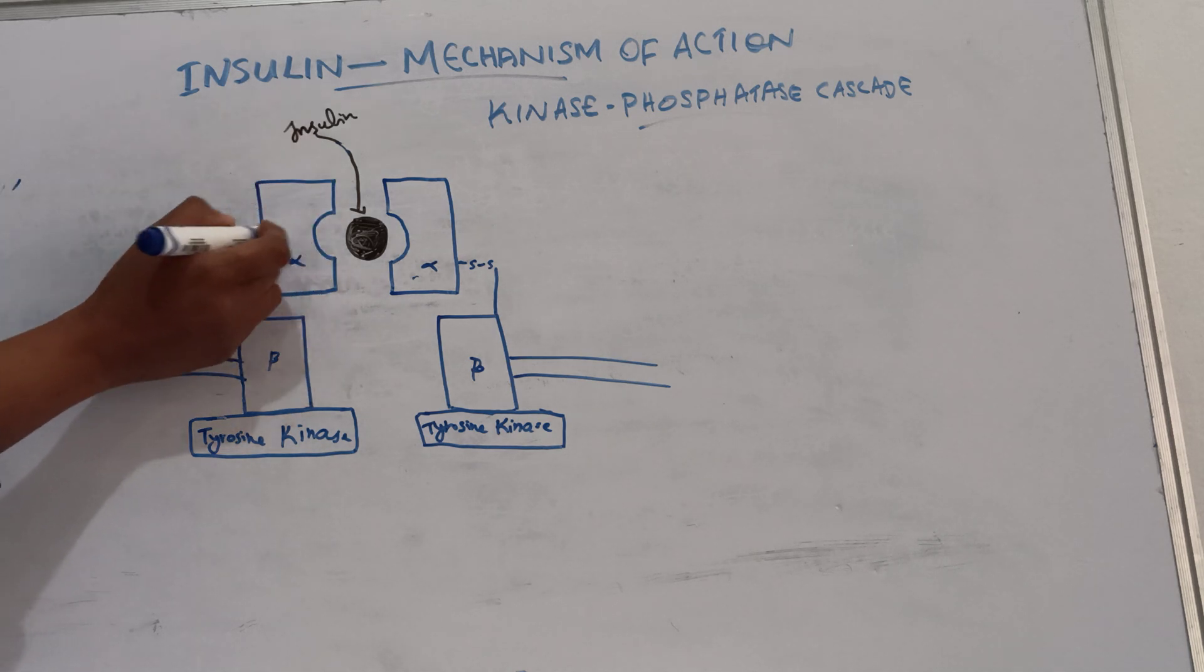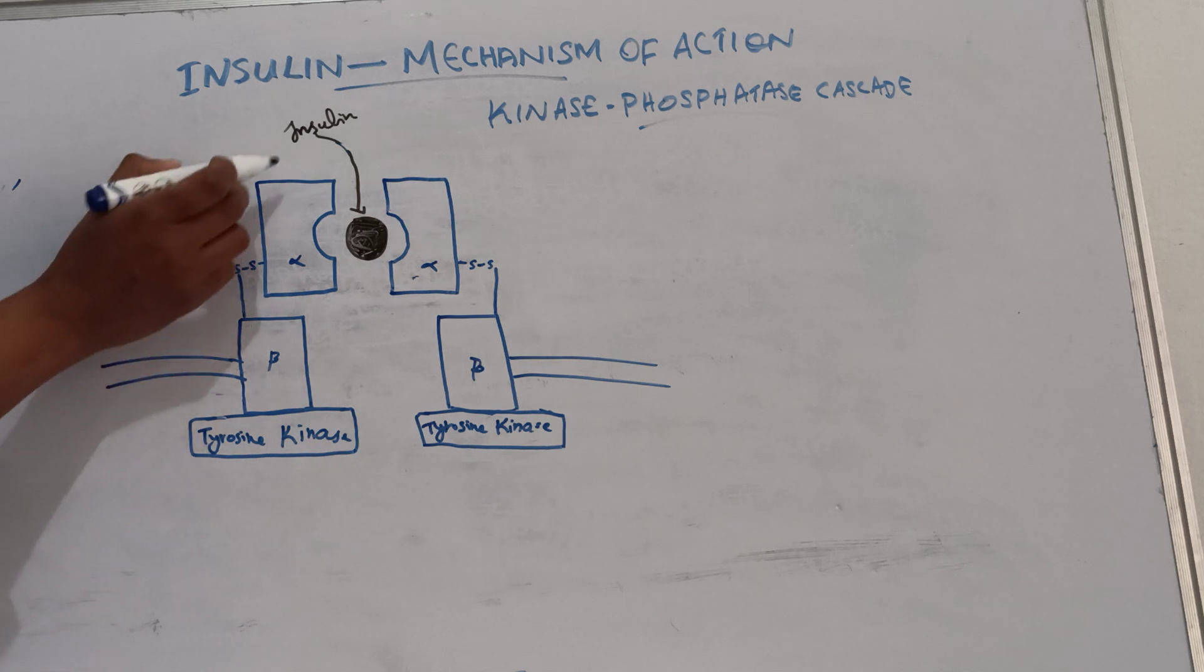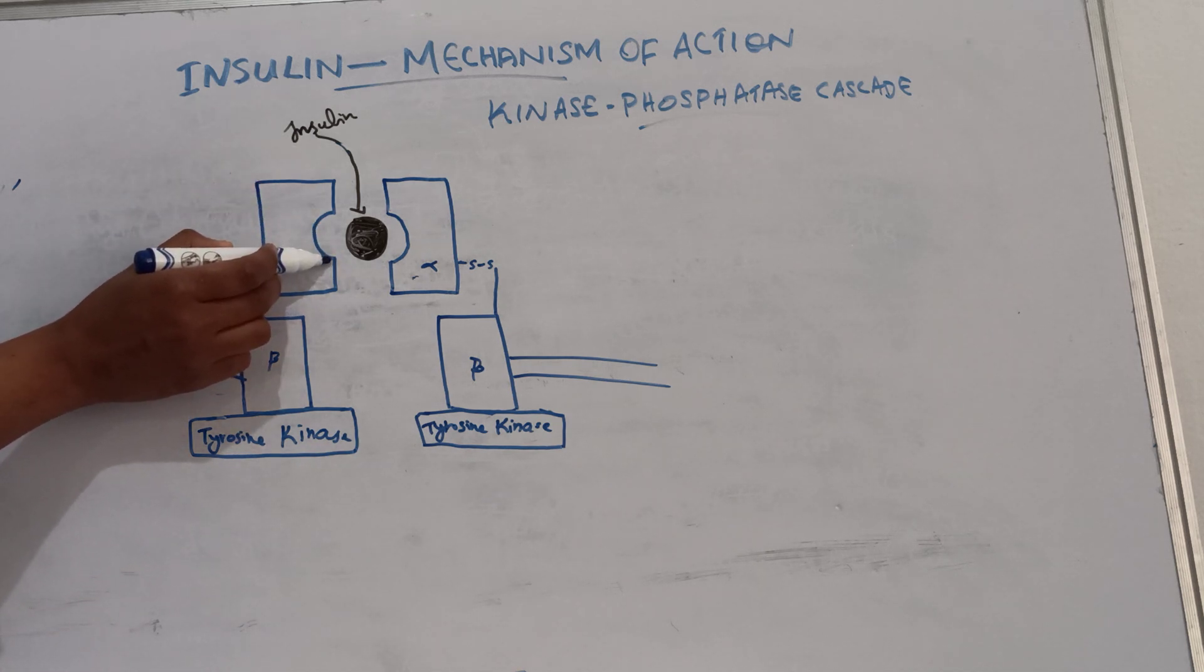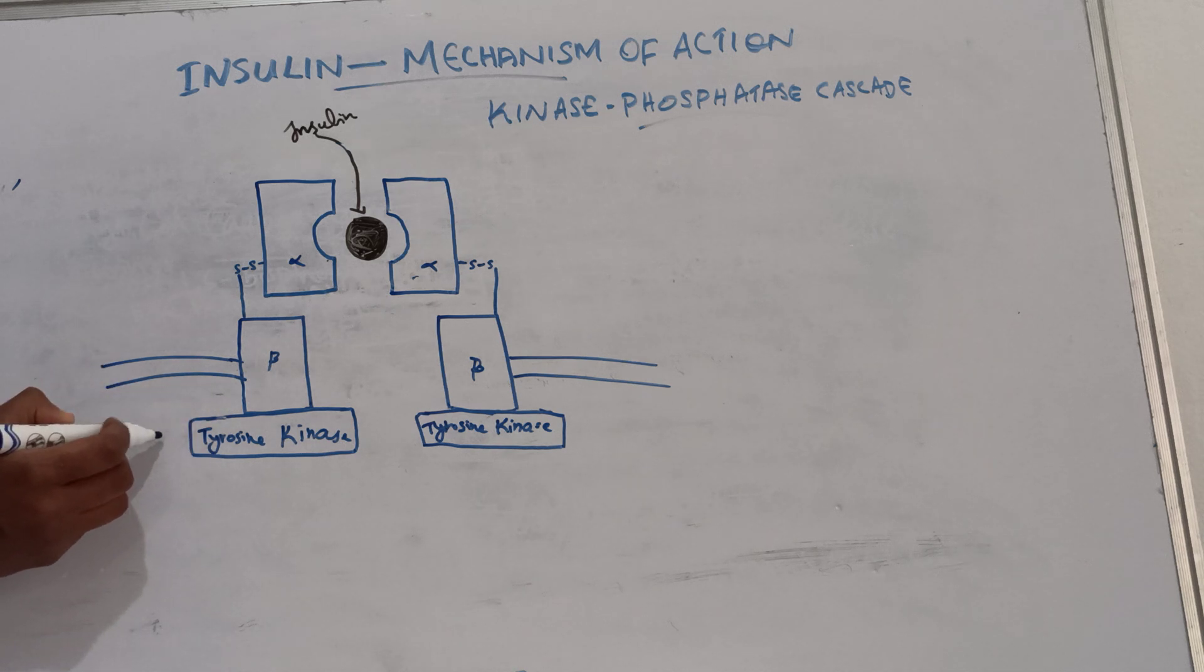Binding of insulin to the receptor stimulates its tyrosine kinase activity. As insulin binds to the alpha subunit, the portion of the beta subunit which is protruding into the cell becomes autophosphorylated.